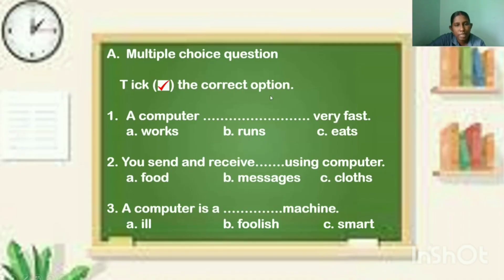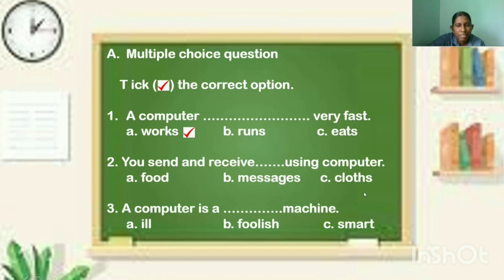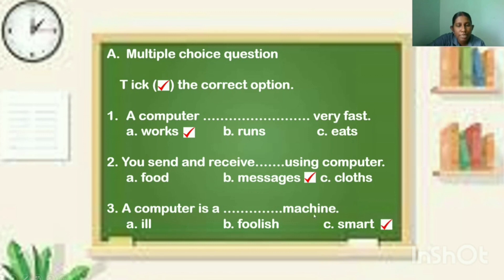All of you understood? Tick the correct option. First question — a computer works very fast. Options are: works, runs, and eats. The answer is 'works.' Computer works very fast. Then second one — you send and receive something using a computer. Options are: food, messages, and clothes. The answer is 'messages.' Then third one — a computer is a smart machine. Options are: ill, foolish, and smart. The answer is 'smart.' Tick the answer smart.